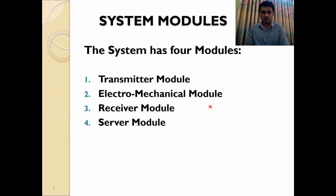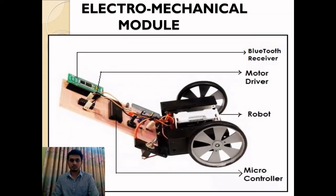Here are the four modules of the system: transmitter module, electromechanical module, receiver module, and server module. Different parts of the electromechanical module are shown here.